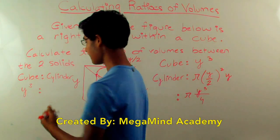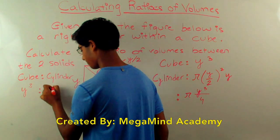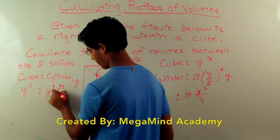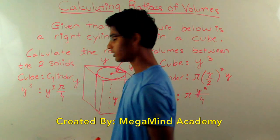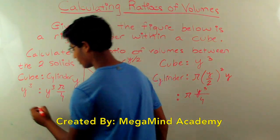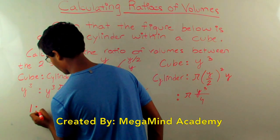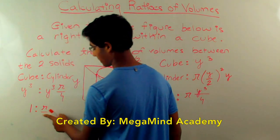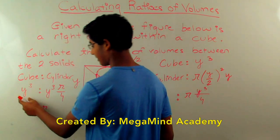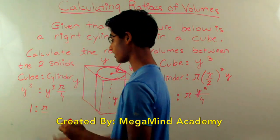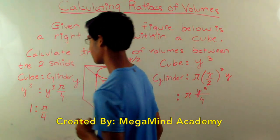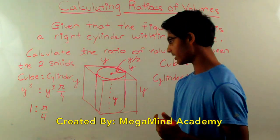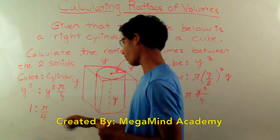But let's rearrange the terms. Let's say this is y cubed times pi over 4. So we know this can simplify down to 1 to pi over 4, because both of the ratios are products of y cubed.